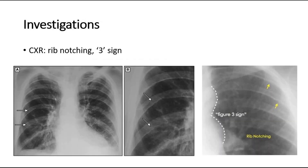To investigate for coarctation of the aorta, we can do a chest X-ray to look for rib notching and also the figure 3 sign. This chest radiograph is from an adult patient with coarctation of the aorta. Image A shows rib notching in the posterior and inferior aspects of the right side ribs, starting at the third rib and most obvious in ribs 7 and 8, pointed by the arrow. Image B is a magnified view of the notching of ribs 7 and 8.